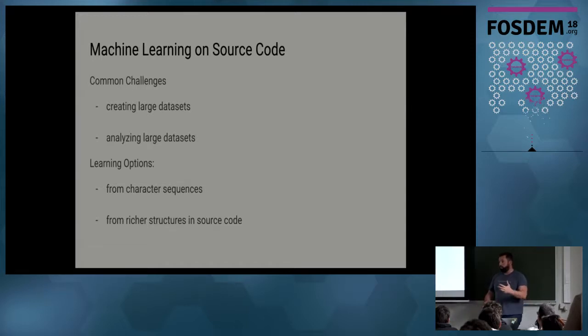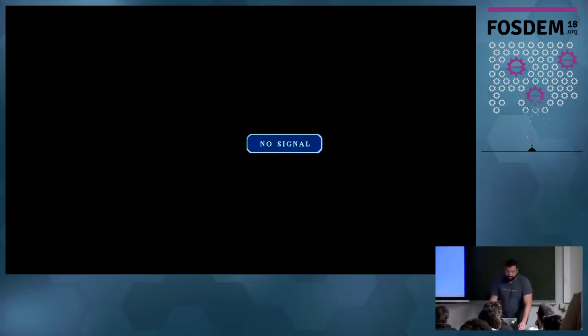What is the structure in source code? The structure in source code is the structure of the language. If you write Python, we have functions, we have instructions, we have function definitions - all of those things. And those things are defined by the language grammar. And every single language has a slightly different grammar.